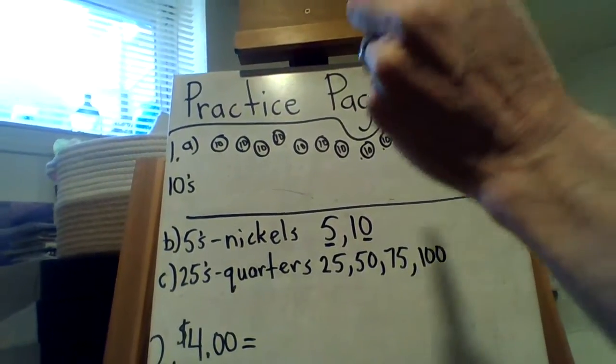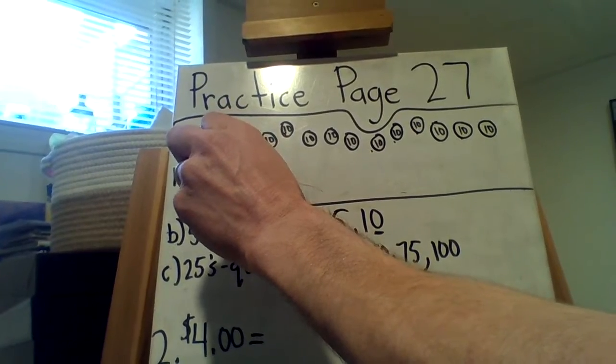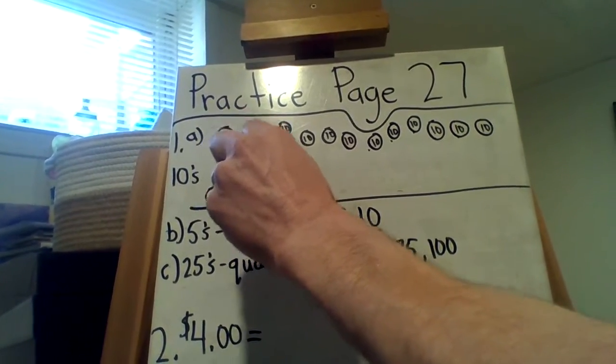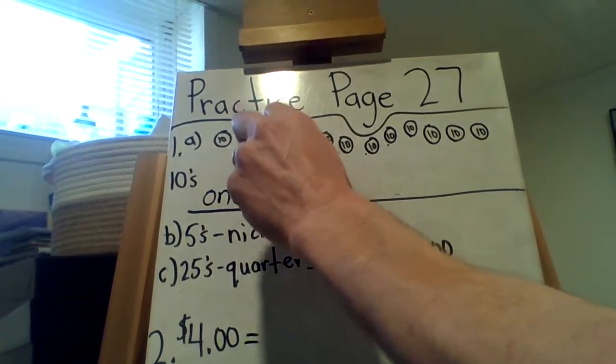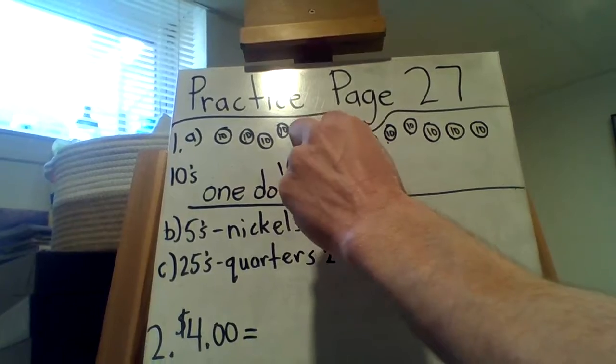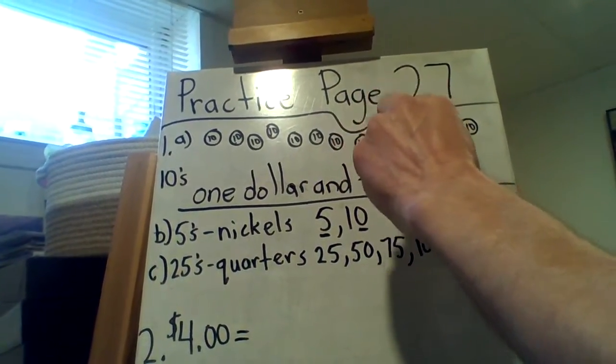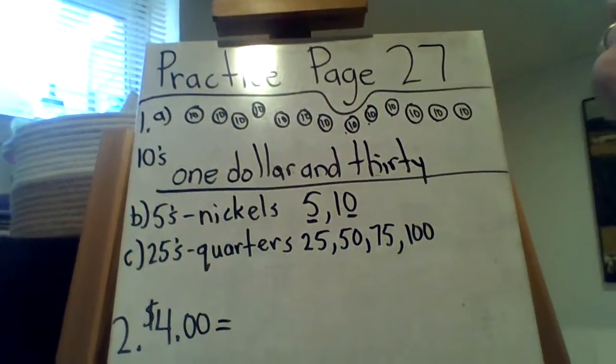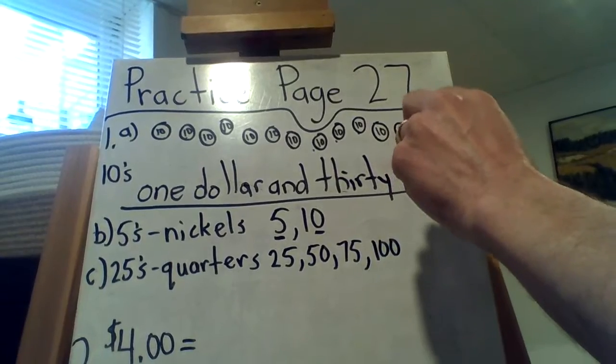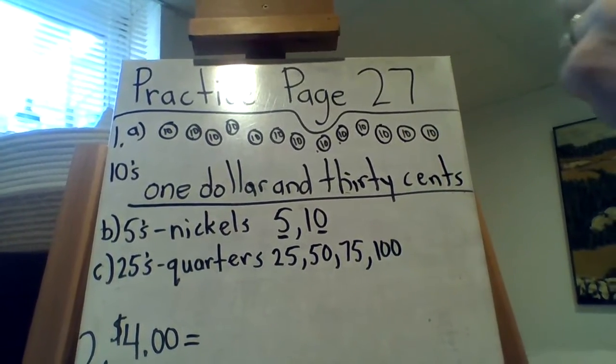So write each amount in words. Now, you're not going to put 130, that's the tricky part. You're actually going to put one dollar, because 100's a dollar, one dollar and 30 cents. And the 30 has that IR, 30. It's a T, it's not 30, 30 cents. It's a little trickier than it might look. Okay, so one dollar and 30 cents.